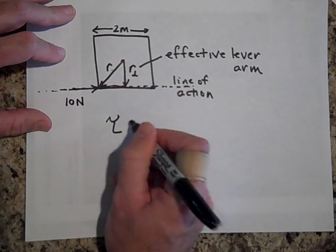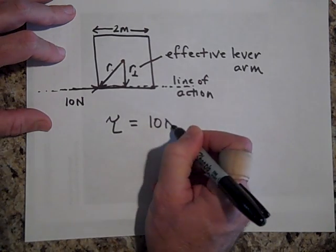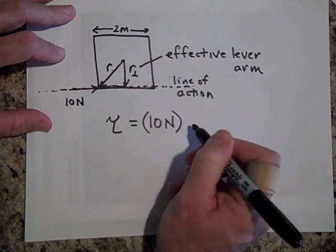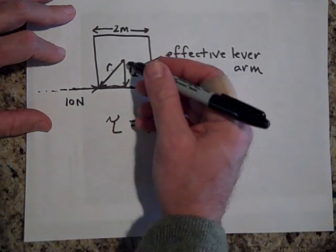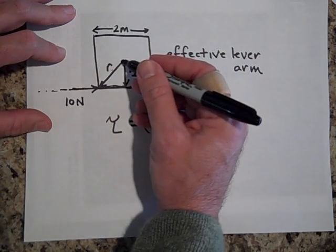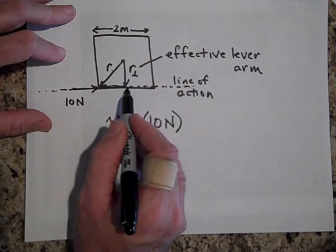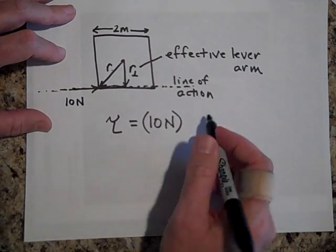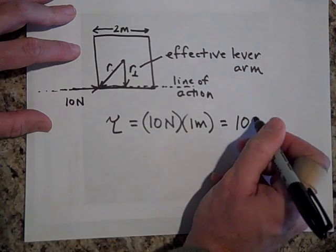So how much torque is caused? It's just going to be 10 newtons. Use the entire force, but then just use the effective lever arm, which would be the distance from the axis to the line of action, the shortest distance from the axis to the line of action. So that would be one meter. So that's 10 newton meters of torque.